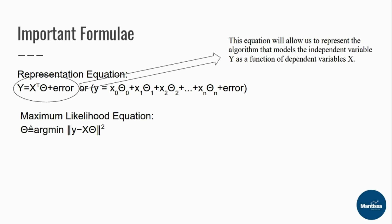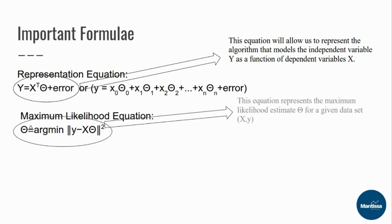The maximum likelihood equation is given by: theta equals the argument that minimizes the norm of (y minus x·theta), squared. This equation represents the maximum likelihood estimate of theta for a given data set (x, y). One of the fundamental problems for us is to estimate theta, which are the parameters of the first equation, and this equation gives us that maximum likelihood estimate.